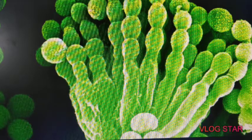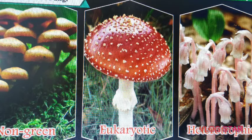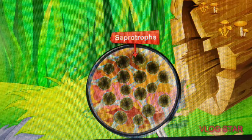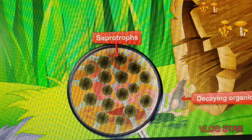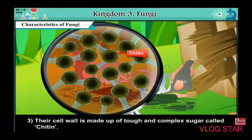Let us talk about the general characteristics of fungi. First, these are non-green, eukaryotic, heterotrophic organisms. Second, most of them are saprotrophs, meaning they show a saprophytic mode of nutrition — that is, they feed upon decaying organic matter. Third, their cell wall is made up of a tough and complex sugar called chitin.